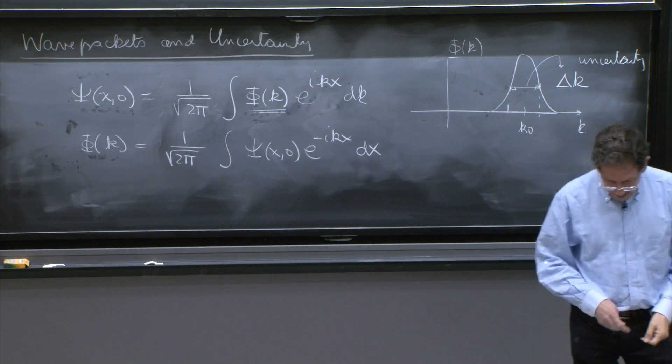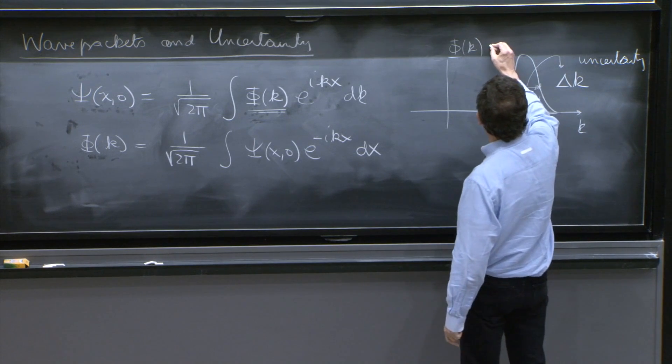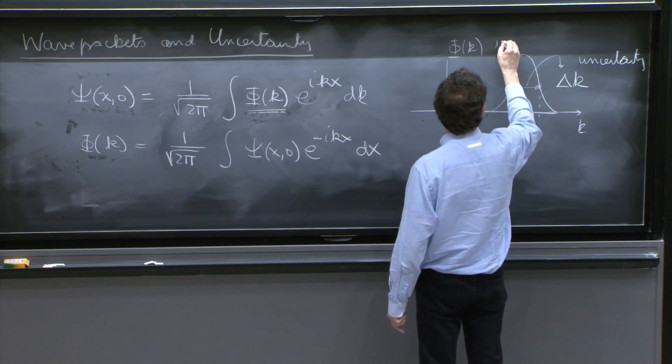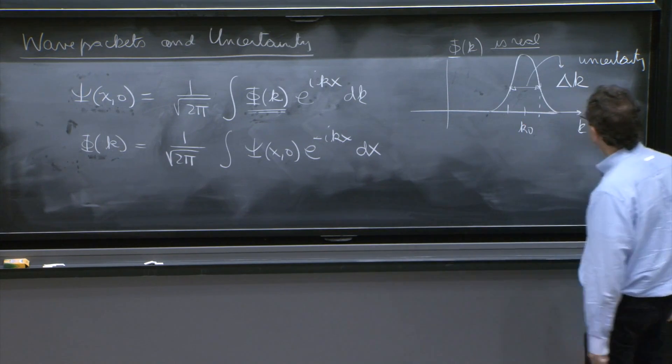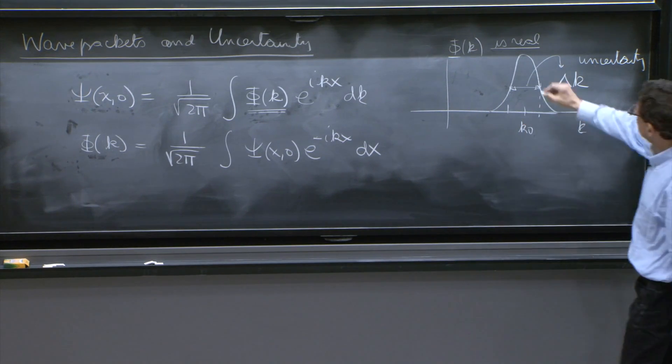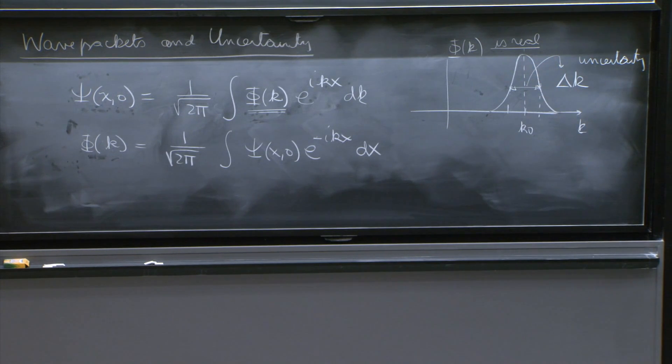So at this moment, that's the uncertainty, Δk. And let's assume that this φ of k is real and it's peaked around k0 with uncertainty Δk.